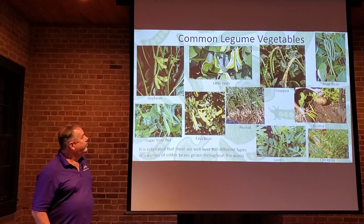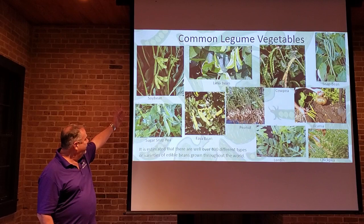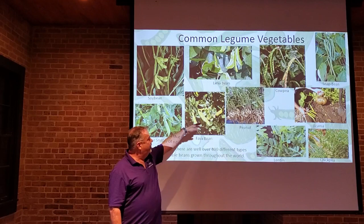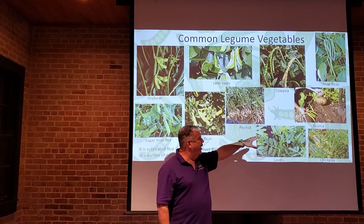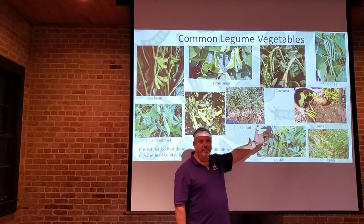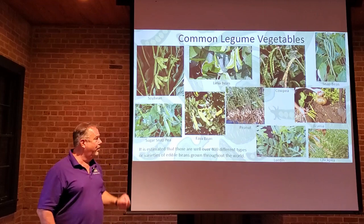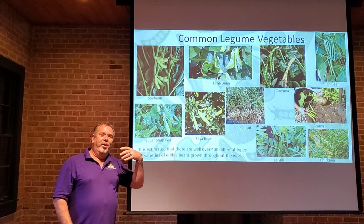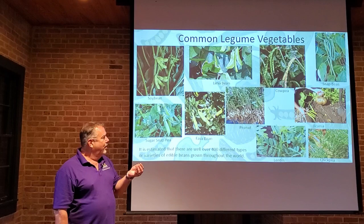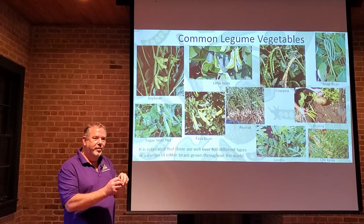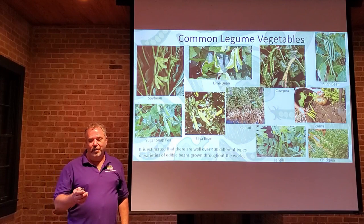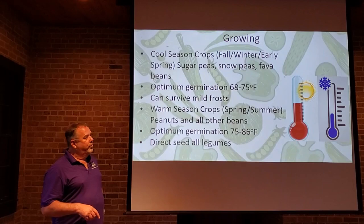Some common legumes we're used to eating are soybeans, sugar snap peas, fava beans, lima beans, peanuts, lentils, chickpeas, cowpeas, snap beans, and jicama. Jicama is interesting because you may not realize it's a legume — usually we eat the large tuber instead of the beans. Peanuts are fascinating because even though they grow underground, they start above ground. When the flower gets pollinated, the stalk dips down, touches the soil, and that spike grows the peanut into the ground — that's where the peanut develops, even though it's not part of the roots.